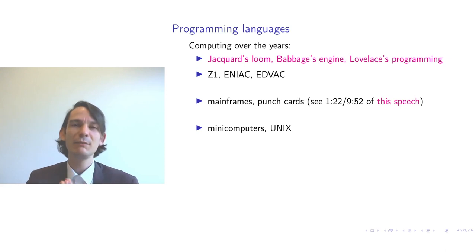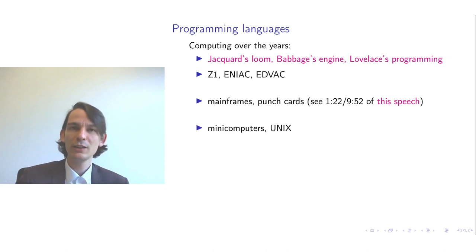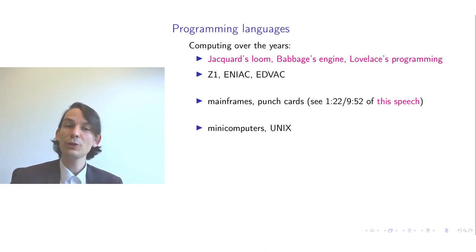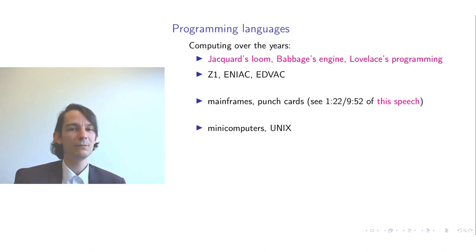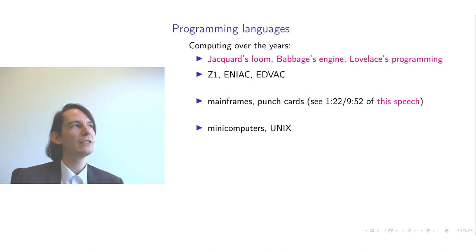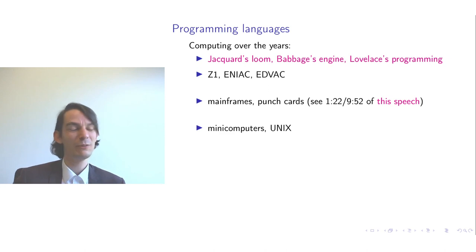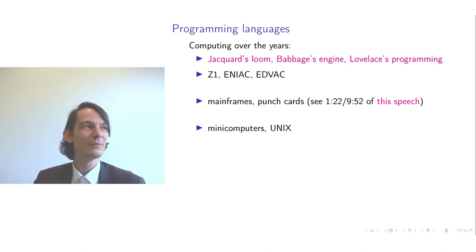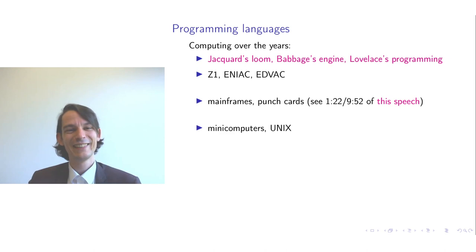Later, minicomputers appeared. Minicomputers were called mini because they did not require a whole room to be installed in — they were of the size of, let's say, a refrigerator, so considerably smaller. Around this time, you also had the development of the Unix operating system, which later became very influential. This was all done on a minicomputer.